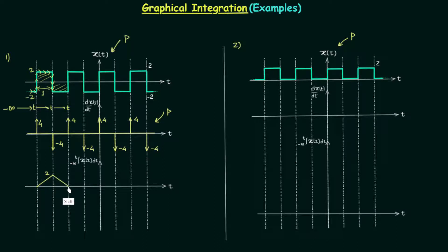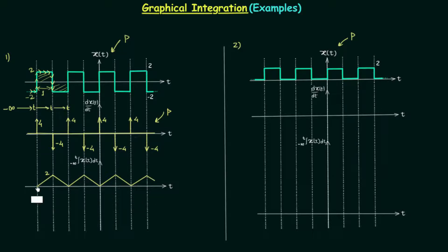Connecting these two points, the graph continues itself in the same pattern. This is how the waveform of the integration of signal xt looks, and we can say it is also periodic in nature. So in the first case, the differentiation of a periodic signal is periodic and the integration of a periodic signal is also periodic.